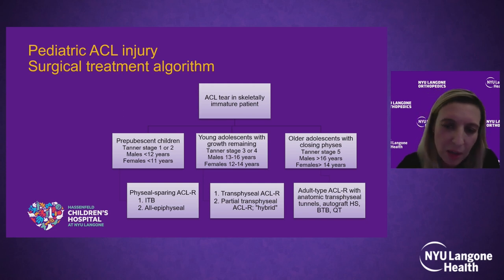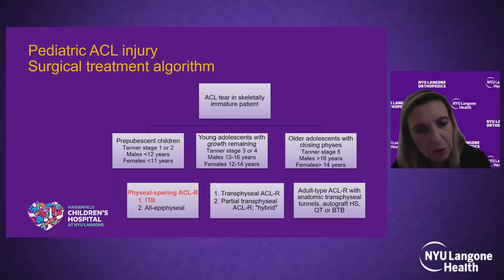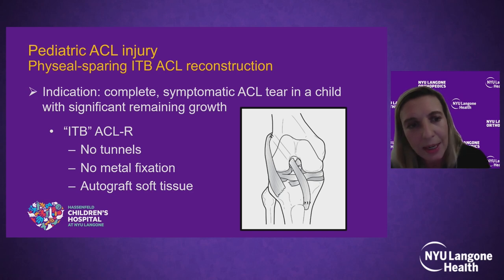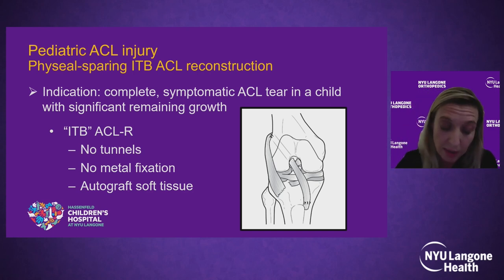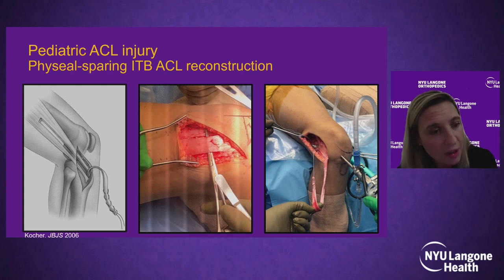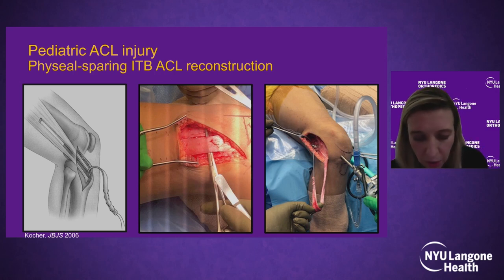For physeal-sparing ACL reconstruction using an autograft iliotibial band, indications are a complete symptomatic tear in a child with significant remaining growth. The IT band ACL reconstruction has no tunnels drilled, no metal fixation, and uses autograft soft tissue. The steps include harvesting the central two-thirds of the iliotibial band — leaving 2–3 millimeters anteriorly and posteriorly — taking an extra-long length with a counter-incision proximally to avoid premature amputation of the graft. The IT band is then harvested and whip-stitched at one end, left attached at Gerdy's tubercle distally.